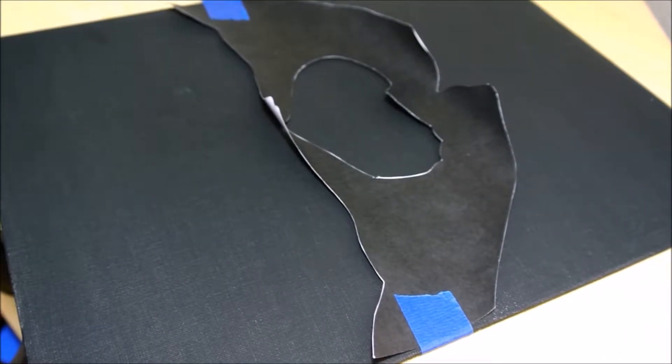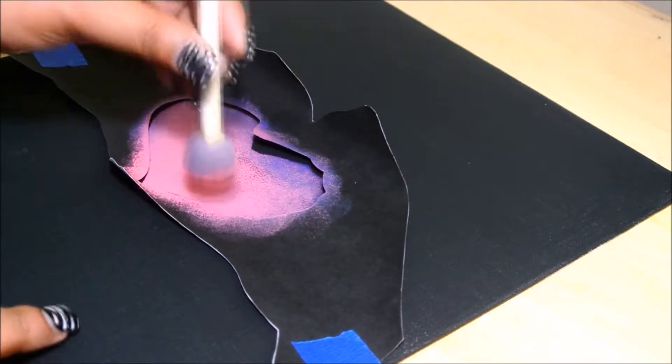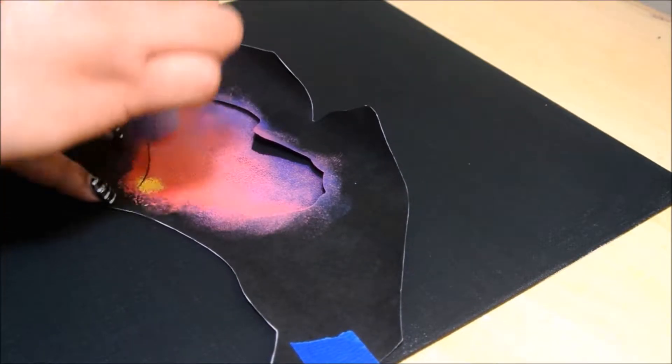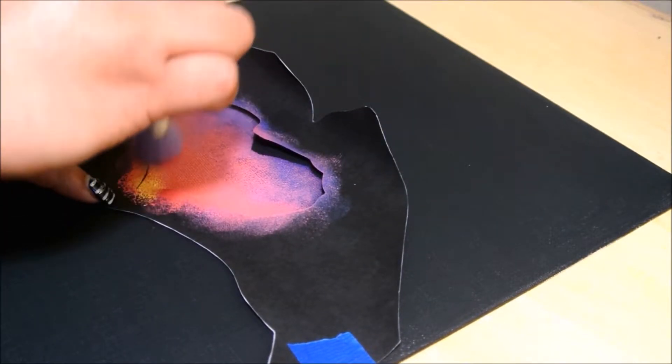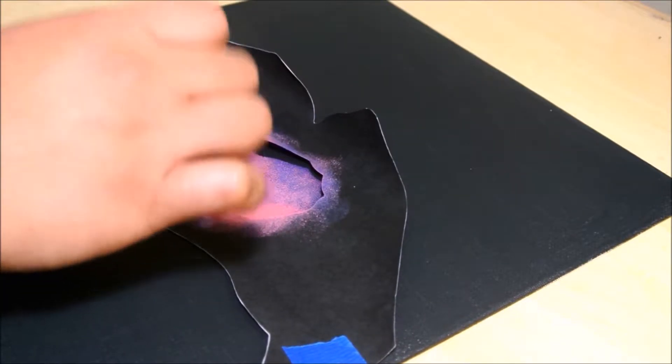Then I started by using a sponge brush, pounced it in the heart using purple and then pink and then yellow, making an ombre effect or sunset effect. Once that was done, I went to the bottom part of the canvas below the stencil and I painted it blue with a little bit of purple.